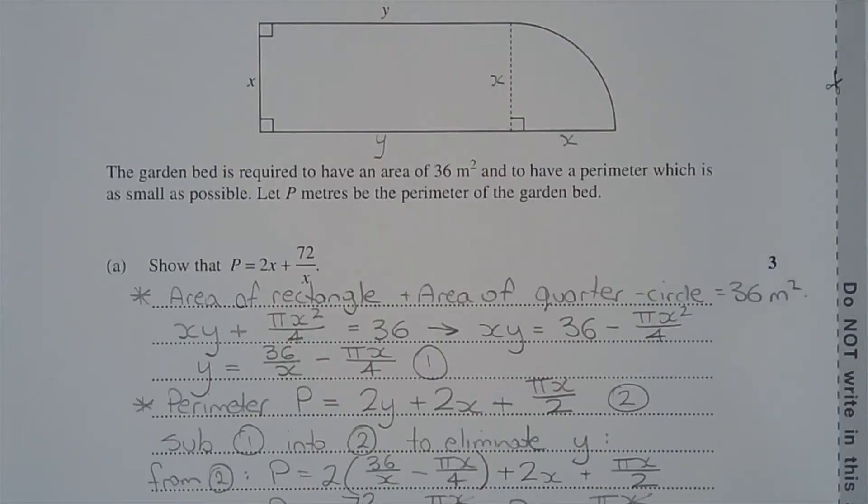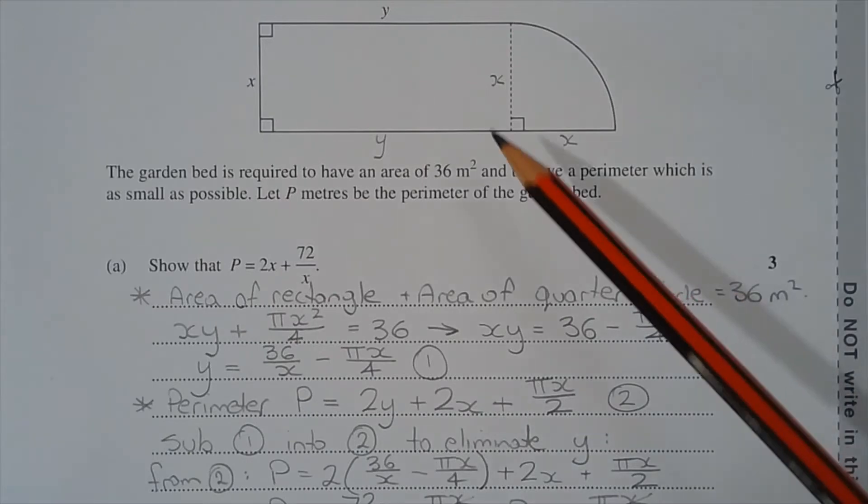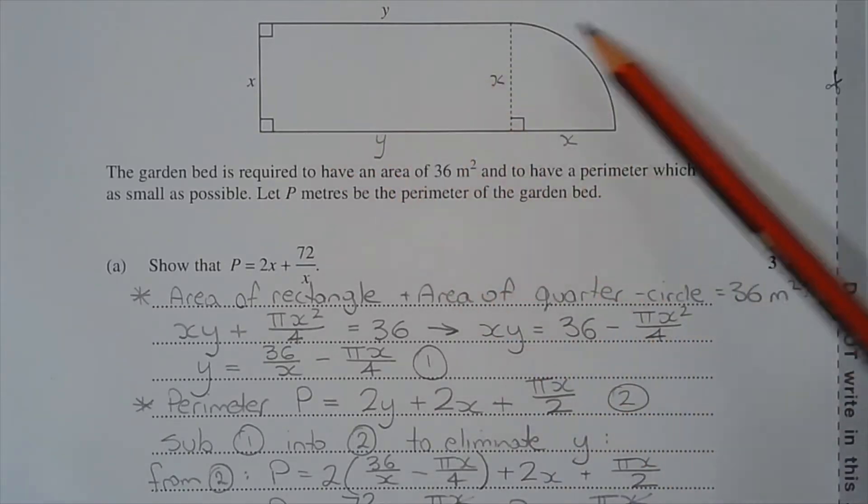The first consideration is the area of this composite shape. The area of the rectangle plus the area of the quarter circle is equal to 36 square meters.